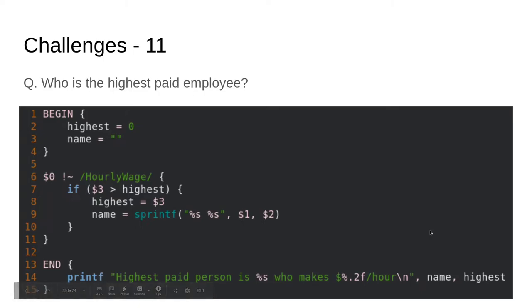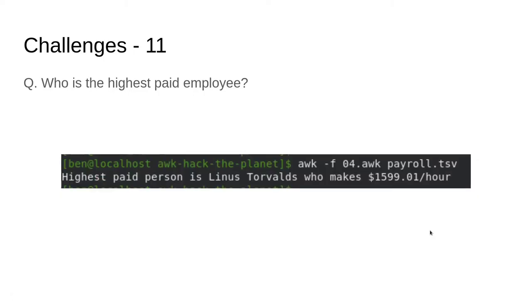Let's take a look to see who that person is — Linus Torvalds. He's our winner here. He makes almost $1,600 an hour. That is not too shabby.